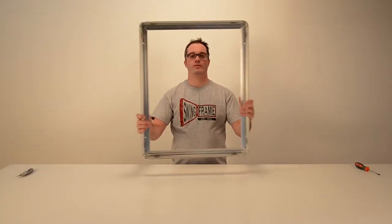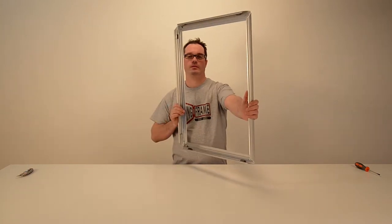First, snap open the snap rails of the frame. For bigger models, all four sides will snap open. For smaller ones, just two.